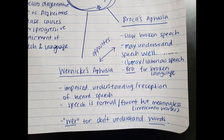Moving on to Wernicke's aphasia — this is when you have impaired understanding or reception of heard speech, so it's the opposite of Broca's. Your speech sounds normal and fluent, but comprehending what someone is telling you is the challenging part. It's worth noting that even though Wernicke's speech sounds fluent, a lot of it comes out like gibberish or jargon, with many meaningless and irrelevant words tossed in. The way I remember it: 'were' stands for words — this person cannot understand the words you are saying.